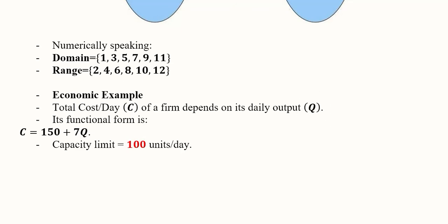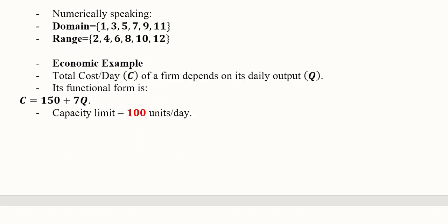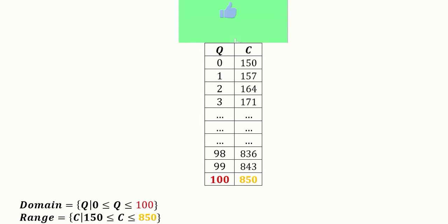However, there is a constraint on the daily output. Definitely within a firm we can produce a certain number of units, so that upper limit is 100 units.